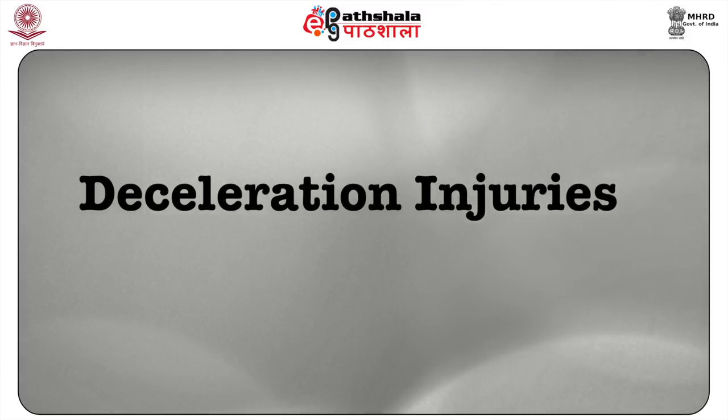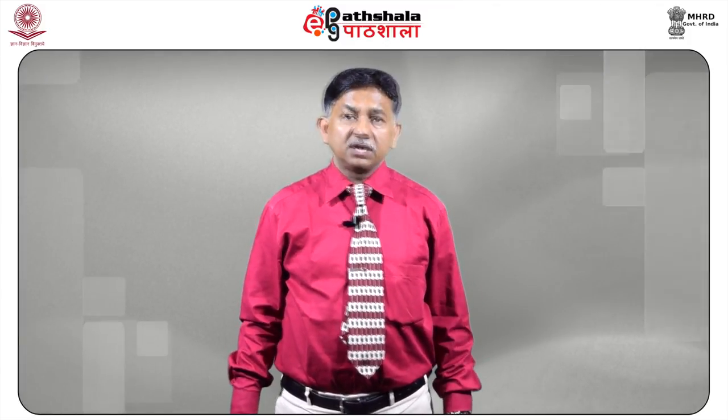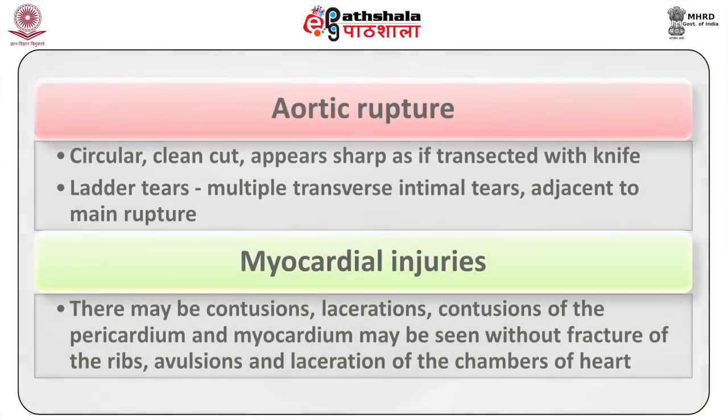Deceleration injuries include a variety of thoracic injuries when the moving thorax decelerates rapidly as a result of impact against a stationary or relatively stationary object. These are not peculiar to the driver only and can be seen in all vehicular occupants. Aortic injuries are classic in deceleration injuries, usually located in the aortic isthmus a few centimeters distal to the ostium of the left subclavian artery, most frequently seen in frontal and near-side crashes involving large magnitude of force. There may also be aortic rupture, myocardial injuries, and tracheobronchial disruption.